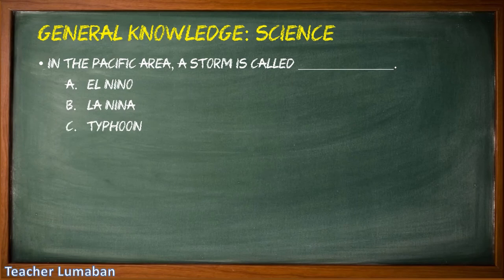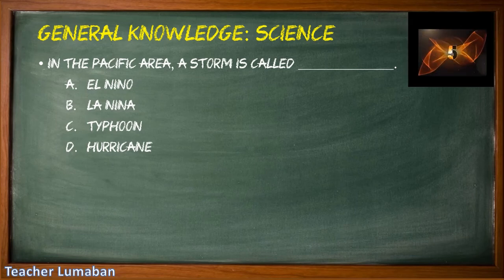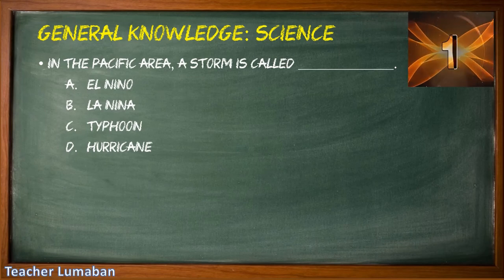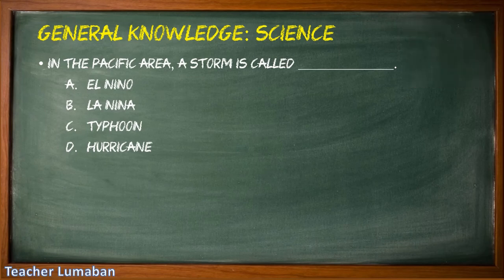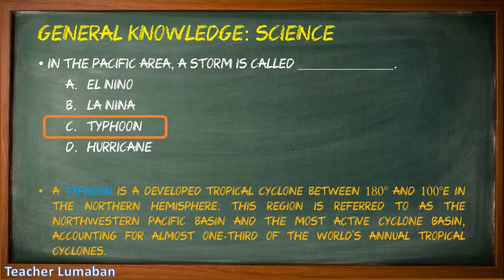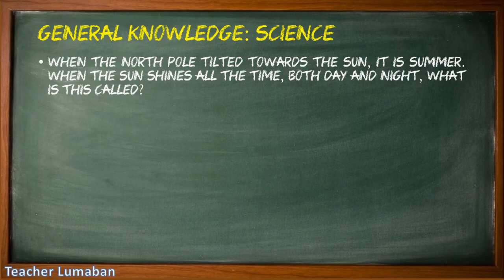In the Pacific area, a storm is called blank. Letter A: El Niño, Letter B: La Niña, Letter C: typhoon, Letter D: hurricane. The correct answer is Letter C: typhoon. A typhoon is a developed tropical cyclone between 180 degrees and 100 degrees east in the northern hemisphere. This region is referred to as the northwestern Pacific basin, the most active cyclone basin, accounting for almost one-third of the world's annual tropical cyclones.